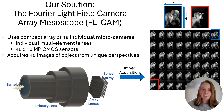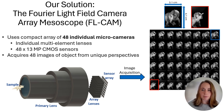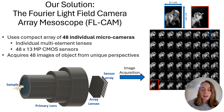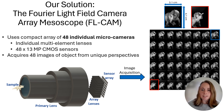Our solution to this challenge is the Fourier light field camera array mesoscope. In designing this system, we took concepts from Fourier light field microscopy, which is an established 3D microscopy technique, and applied them over a larger scale. The Fourier light field camera array mesoscope, which I'll be referring to as the FL cam, uses a compact array of 48 synchronized micro cameras, each of which has its own multi-element lens and high pixel count CMOS sensor.